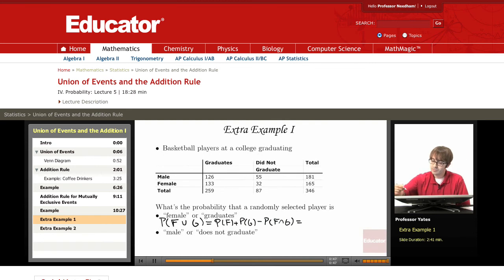So the probability that they're female, we would look at this row here and we see that we have 165 females out of 346. We also have for ones who graduate, we're looking at that column for a total of 259. So we have 259 divided by 346. And we're subtracting out where they overlap, which is 133 out of 346.